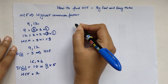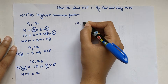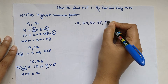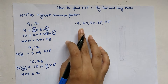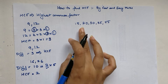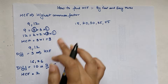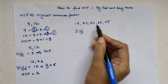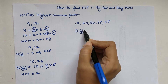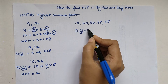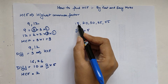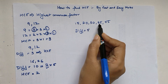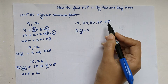Now let me show you this trick with a larger set of numbers: 15, 20, 30, 35, 55. When the given set has more than 2 numbers, the difference we use is the smallest difference between any pair in the set. Here the smallest difference is 5, since the difference between 15 and 20 is 5, and differences between other pairs are 10 or 20.